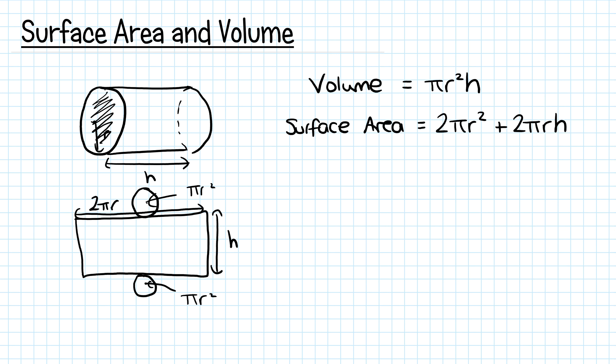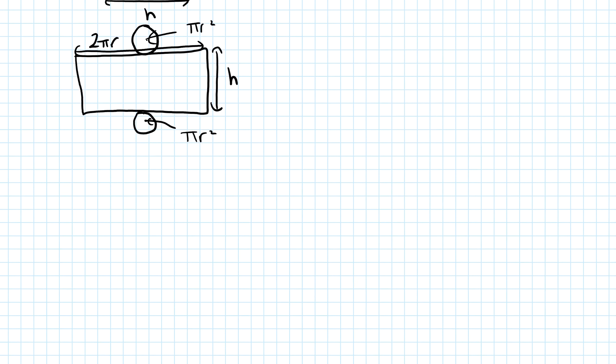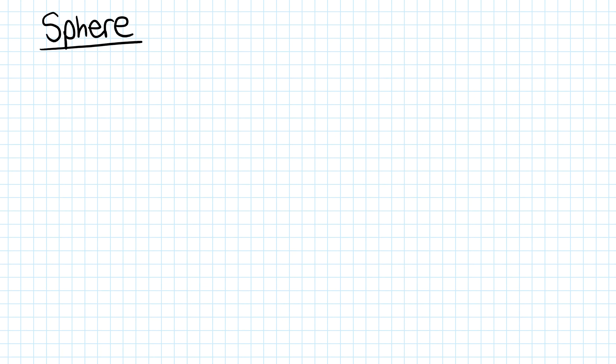That's what you do for a basic prism. What we want to look at today is spheres and cones. These formulas are given to you on the formula sheet at the front of your exam papers, so you don't need to learn them, though it's good if you can.